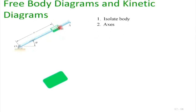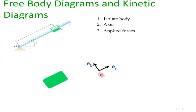For the green-colored sleeve, we isolate it and draw the axes. Since this problem has natural geometry amenable to polar coordinates, we use a radial direction eᵣ and transverse direction eθ. We then find the applied forces. The external force acting on this sleeve on its own is mg. All other forces from the rod are reactive — support forces that we replace with forces.